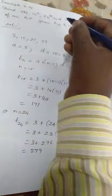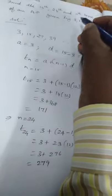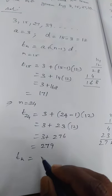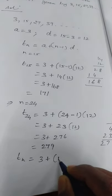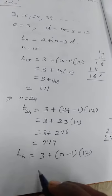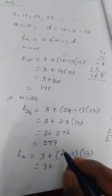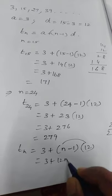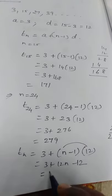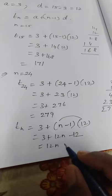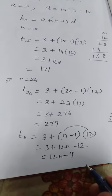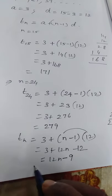Next one, the general term. Tn nth term means Tn is equal to A is 3 plus N is N minus 1 into D is 12 is equal to 3 plus N into 12, 12 N minus 1, 12 is 12. The next one, 12 N, 3 minus 12. 3 minus 12, subtract the number, put the bigger number sign, minus 9, 12 N minus 9.